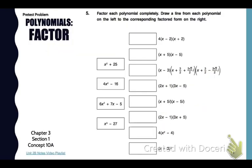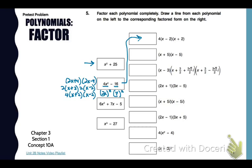Go to number 5 in your pretest. We need to factor each polynomial completely — draw a line from each polynomial on the left to the corresponding factored form on the right. For 4x squared minus 16, I recognize the difference of two squares, factoring as 2x plus 4 times 2x minus 4. But I can continue factoring by taking a 2 out of each, giving me 4 times x plus 2 times x minus 2. That's my top choice.